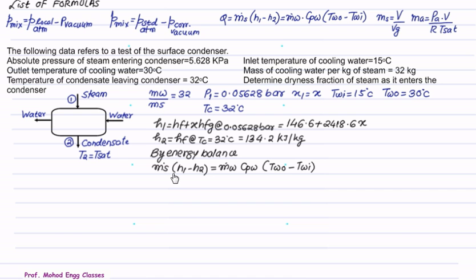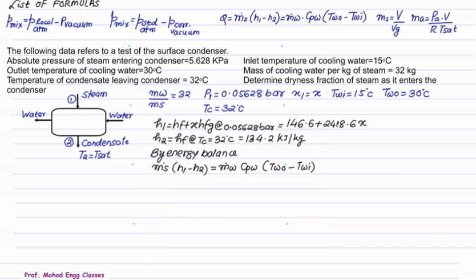By energy balance: Ṁs(H1 − H2) = Ṁw · CPw · (TWO − TWI). Substituting: H1 = 146.6 + 2418.6X, H2 = 134.2, Ṁw = 32·Ṁs, CPw = 4.187, and (30 − 15) = 15. The Ṁs cancels, and solving the equation gives X = 0.826. This is the required dryness fraction of the steam at inlet to the condenser.